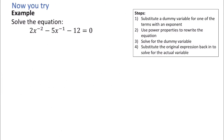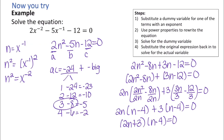Pause the video and try this similar problem on your own. In this problem, we're going to use n to represent x to the negative 1. When we do that, we get n squared equals x to the negative 2. So we can rewrite this as a quadratic: 2n squared minus 5n minus 12 equals 0.